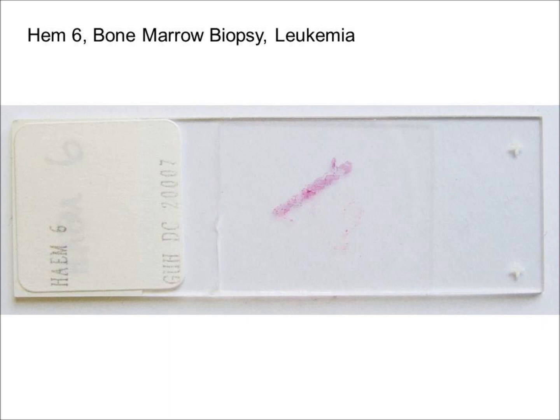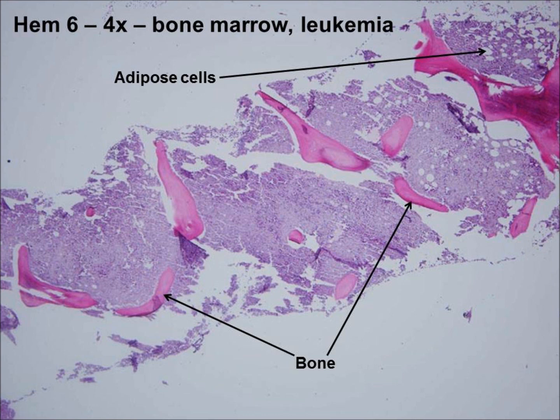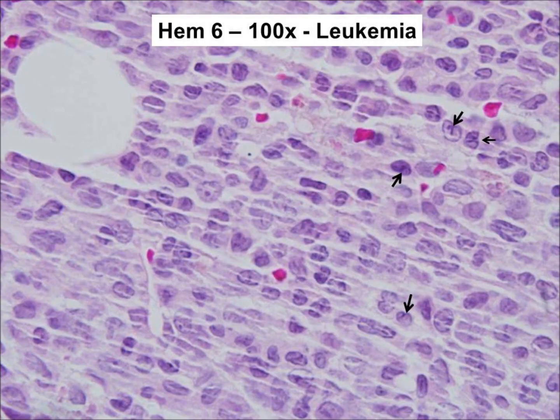Examine the slide labeled HEME-6, which contains a bone marrow biopsy from a patient with acute leukemia. Under low power, observe that the cellularity of one end is fine with lots of adipose tissue, while the other end presents with a high degree of cellularity. Examine the end with the increased cellularity under higher power. There is an absence of normal bone marrow cells, which have been replaced by the malignant cells. The nuclei of the tumor cells have a notched appearance, as indicated by the small arrows, and this reflects the homogeneous, monoclonal proliferation of the tumor cells. This slide concludes the laboratory on the hematopoietic malignancies.